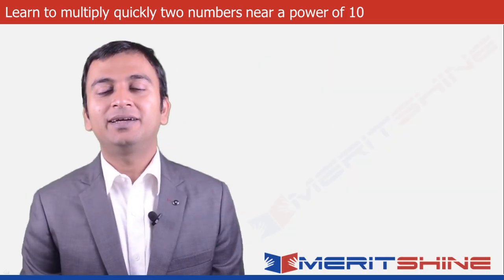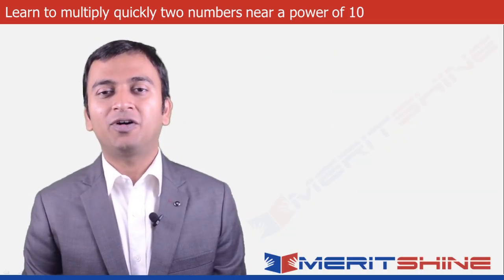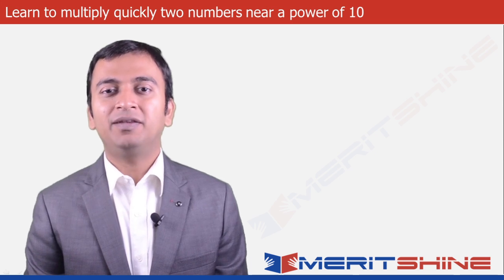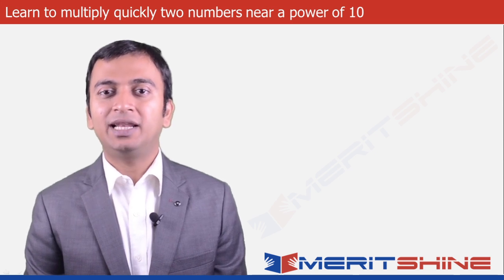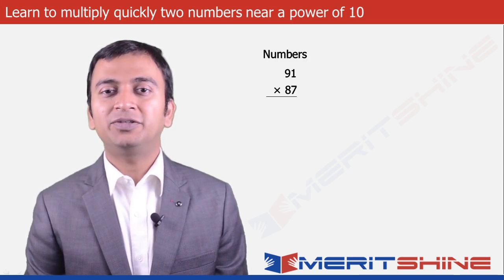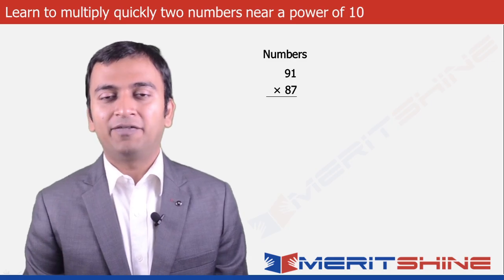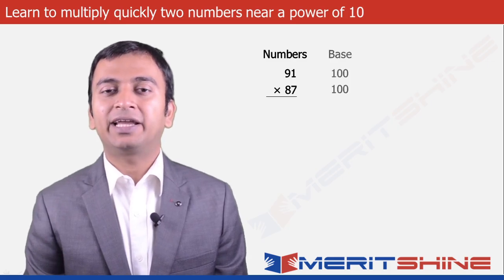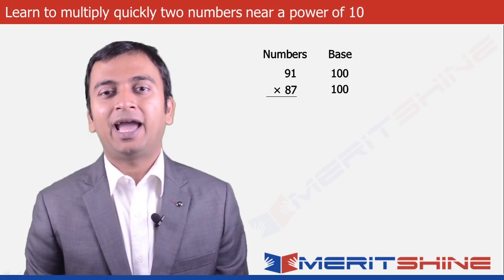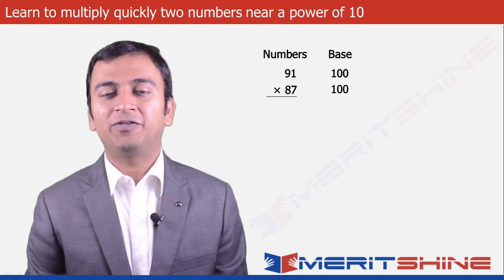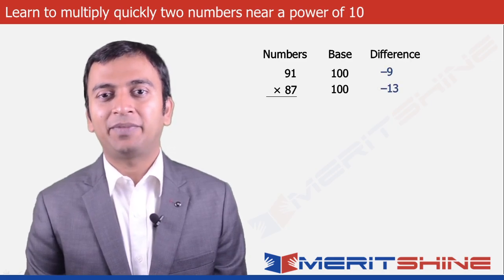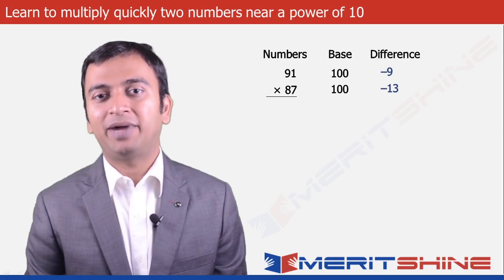So far we have seen the numbers were always greater than the base. How about trying an example where the numbers are less than the base. Let us take 91 into 87 as an example. Our base here again would be 100 as both these numbers are close to it, and the differences would be 91 minus 100 equals minus 9 and 87 minus 100 equals minus 13.